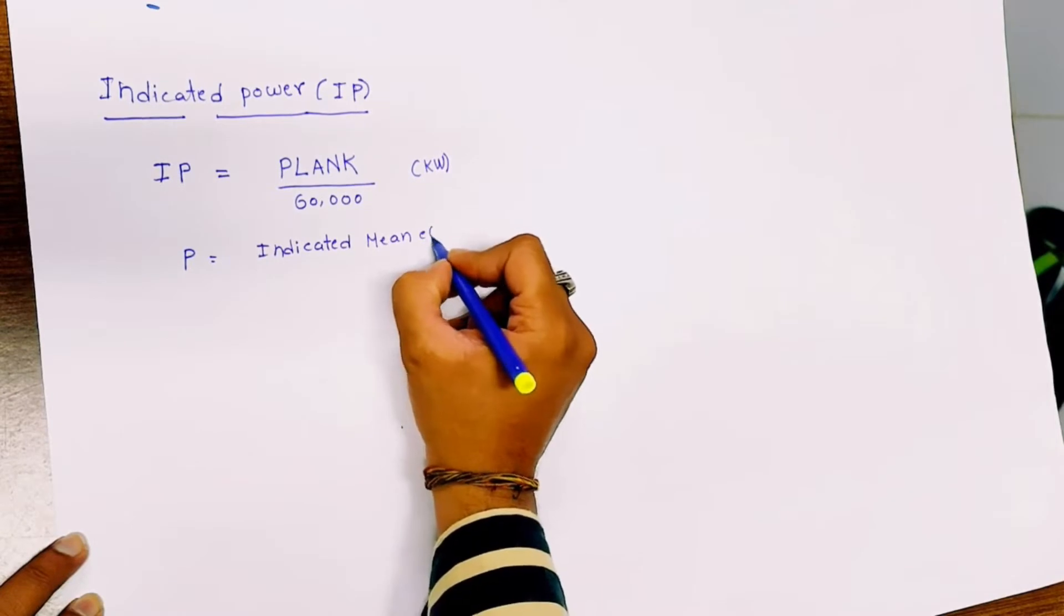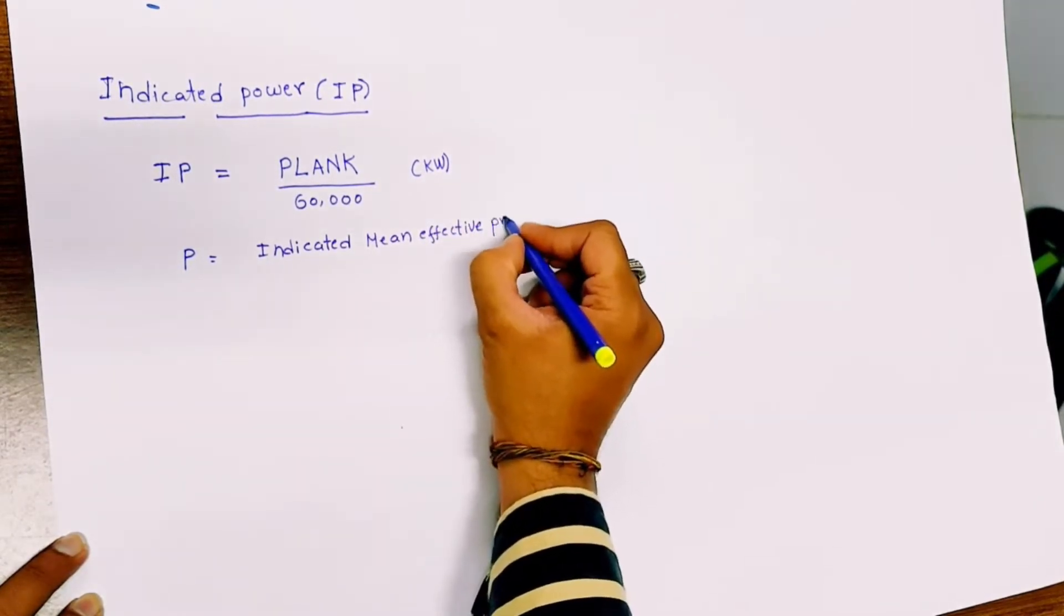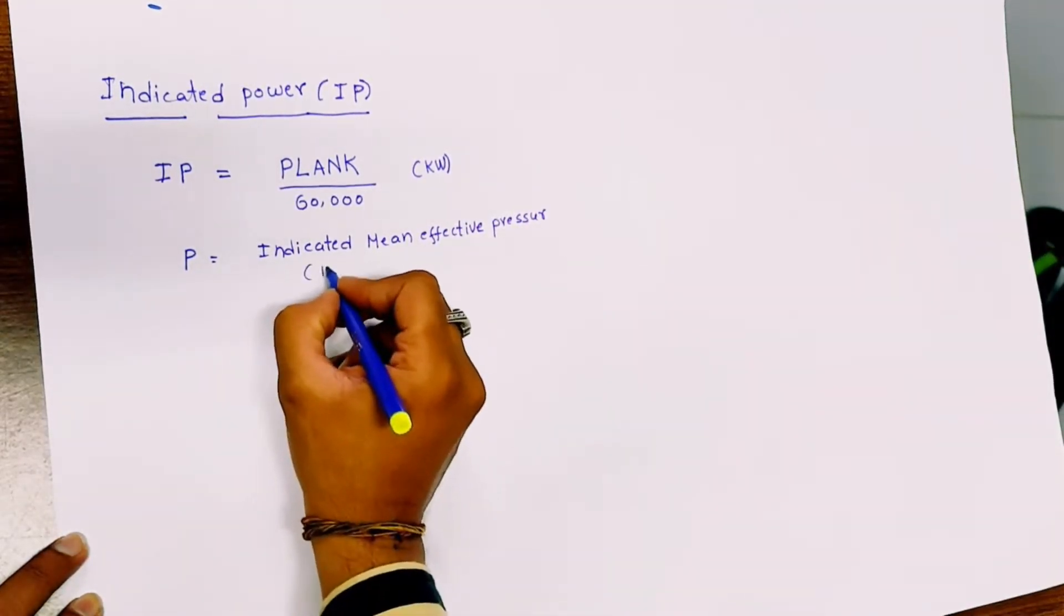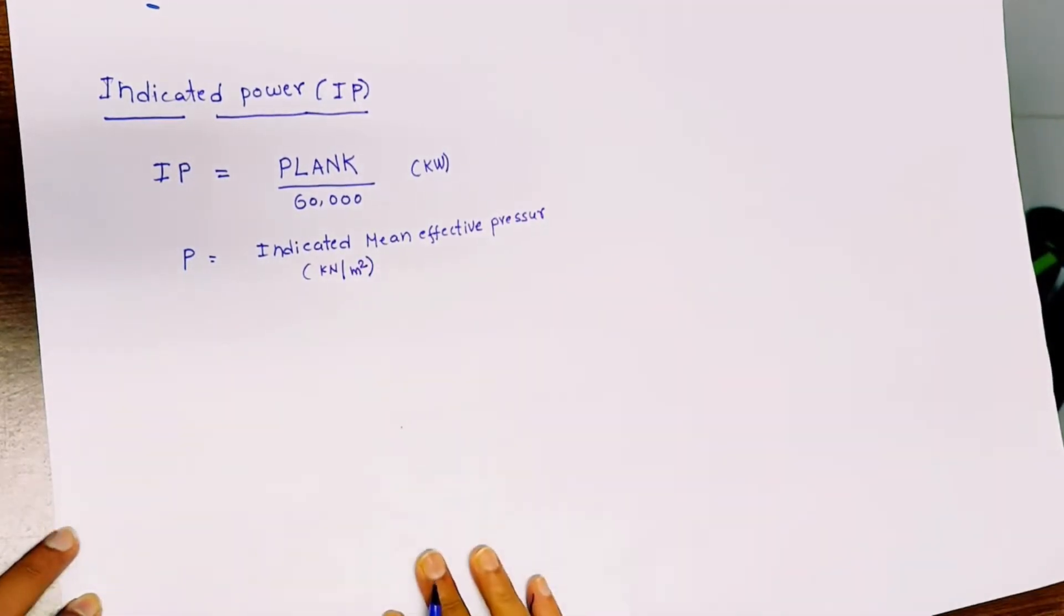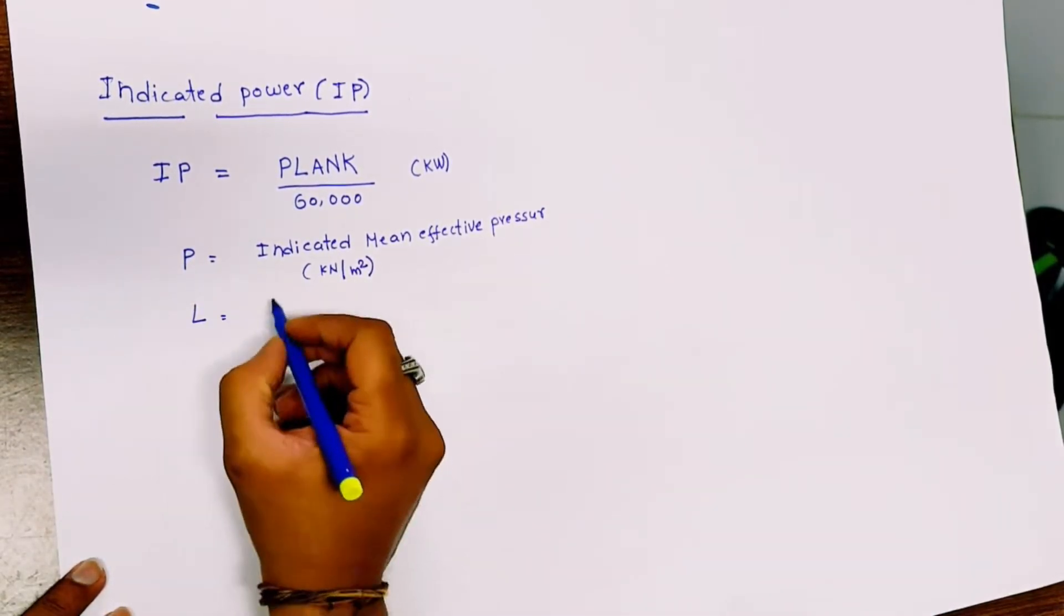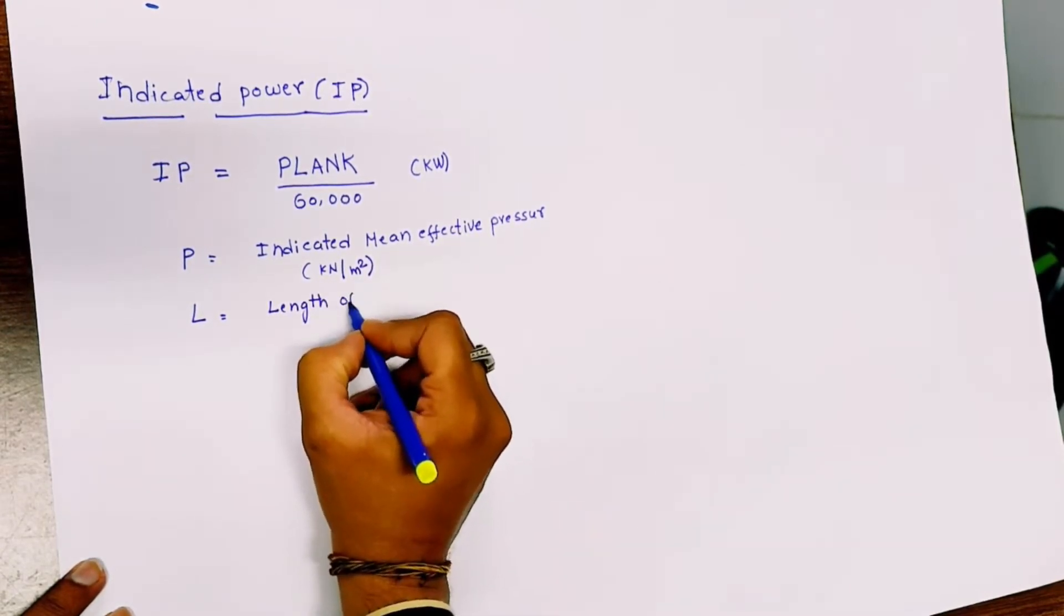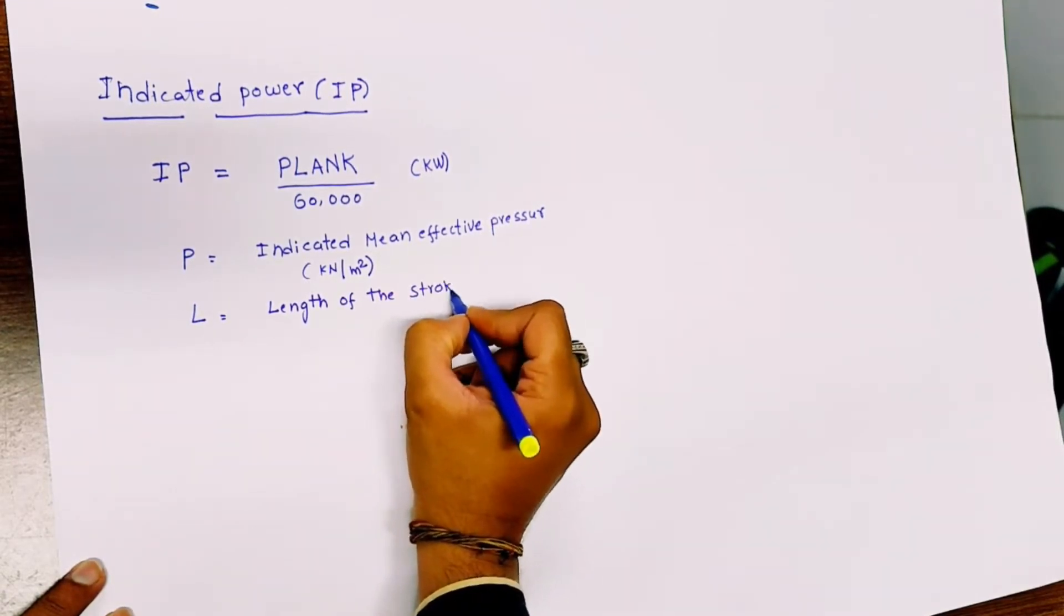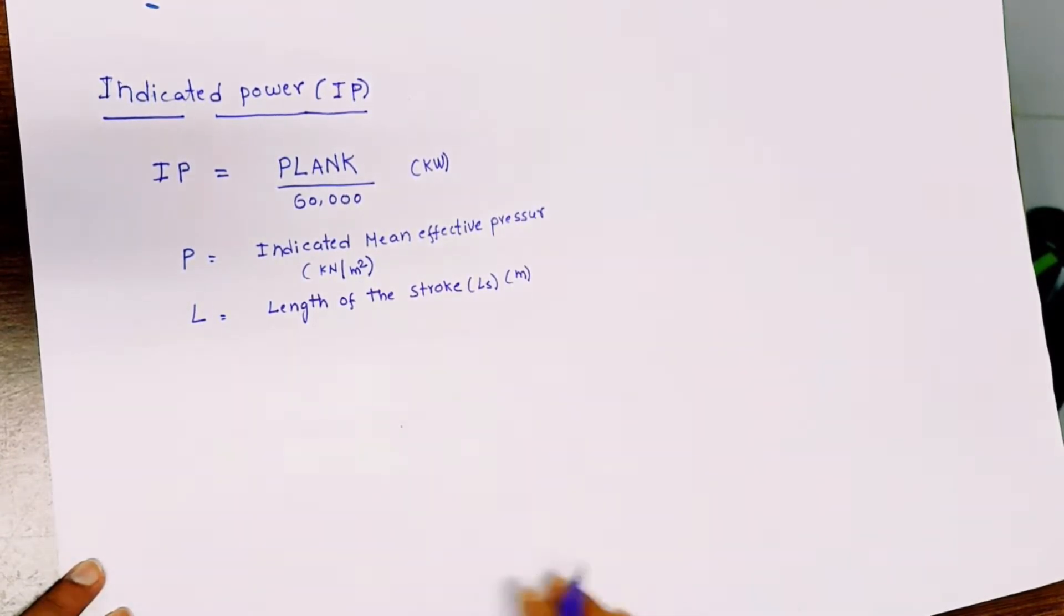mean effective pressure, with units in kilonewton per meter squared. Next, L equals the length of the stroke, which you can represent by L subscript S, in meters.